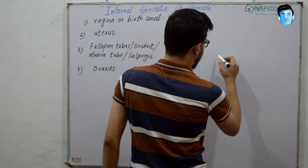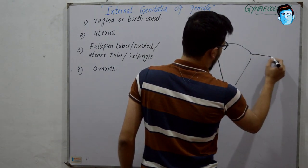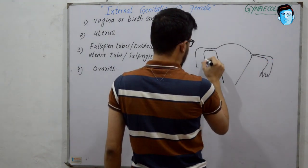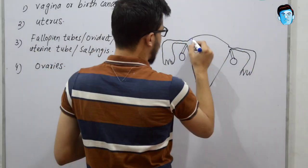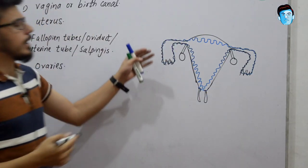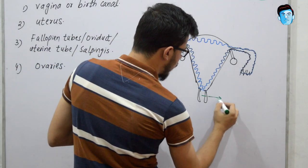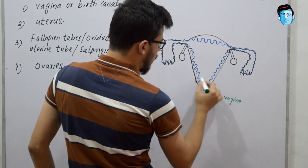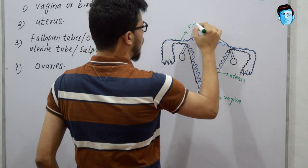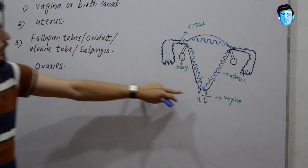Let's draw the diagram of the internal genitalia of the female. In the diagram, you can see the vagina, cervix, uterus, fallopian tube, and ovary. These are the parts of internal female genitalia: vagina, uterus, fallopian tube, and ovary.